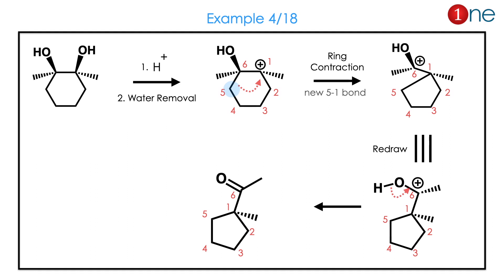Let us look at the next question. You have a vicinal diol in a ring. Since the system is symmetrical, any alcohol can be removed. Ring contraction occurs and a 5-membered ring is formed. A new 5-1 bond is formed and the 5-6 bond is broken, giving the 5-membered ring. The final product is the ketone. The vicinal diol can also be in the ring itself.